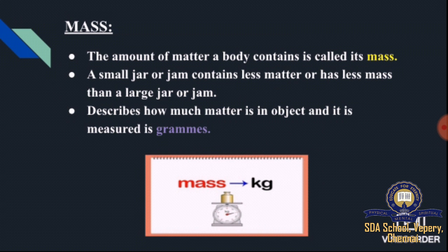What is mass? The amount of matter a body contains is called its mass. Simply, we can consider a jar containing some grams of substance. The jar is considered the body, and the grams represent the amount of matter. So the amount of matter a body contains is called its mass. It can be measured in grams.